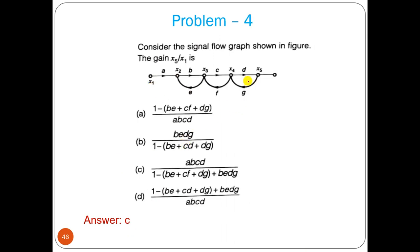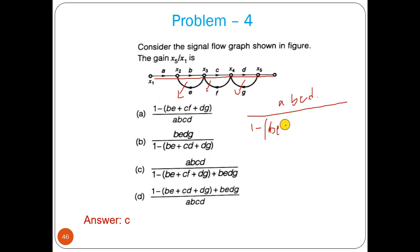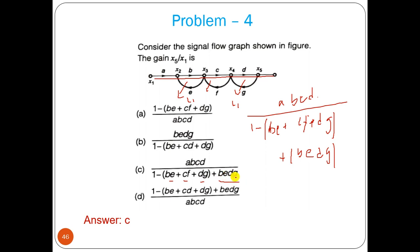This is the next easy GATE problem. There is one forward path with gain A*B*C*D, and delta1 = 1 since all three loops touch the forward path. The three loops have gains B*E, C*F, and D*J. Loops B*E and D*J are non-touching. So delta = 1 − (BE + CF + DJ) + BE*DJ. Transfer function = ABCD / delta.